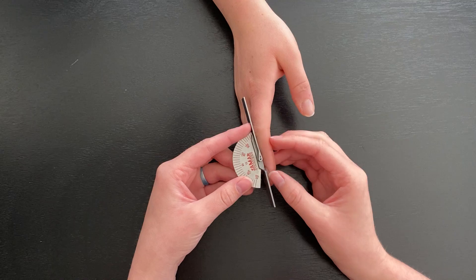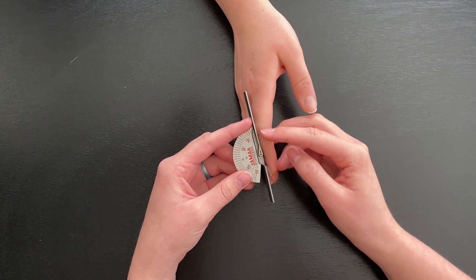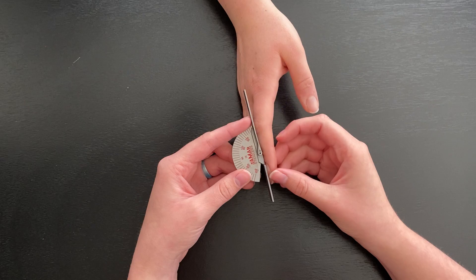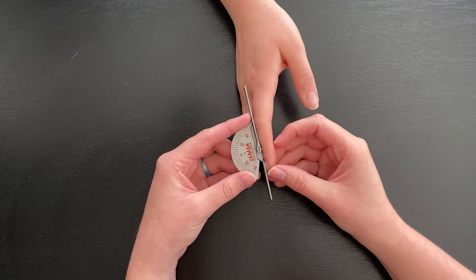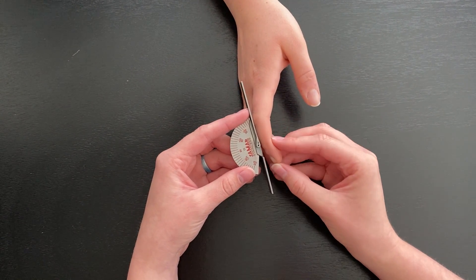So the stationary arm is going to be on the dorsal side midline to the proximal DIP joint and the movable arm will be on the dorsal side midline distal to the DIP joint.